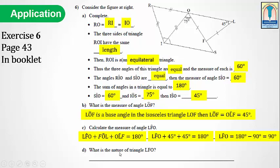D: What is the nature of triangle LFO? Triangle LFO is an isosceles triangle, and from part C we found that the measure of angle LFO is 90 degrees — it is a right angle. Then triangle LFO is an isosceles triangle having a right angle. So LFO is a right isosceles triangle.